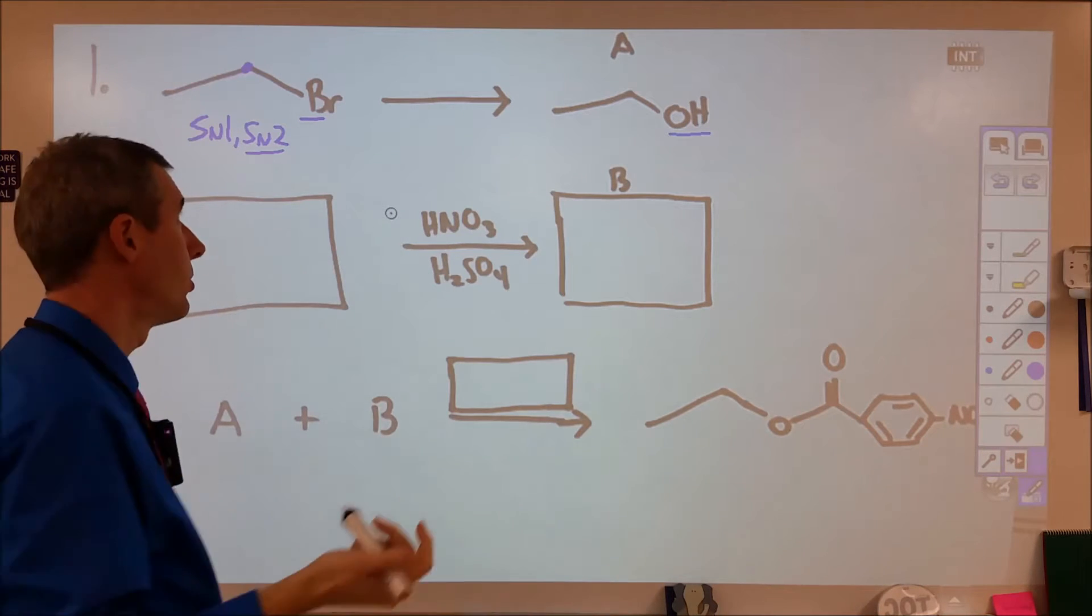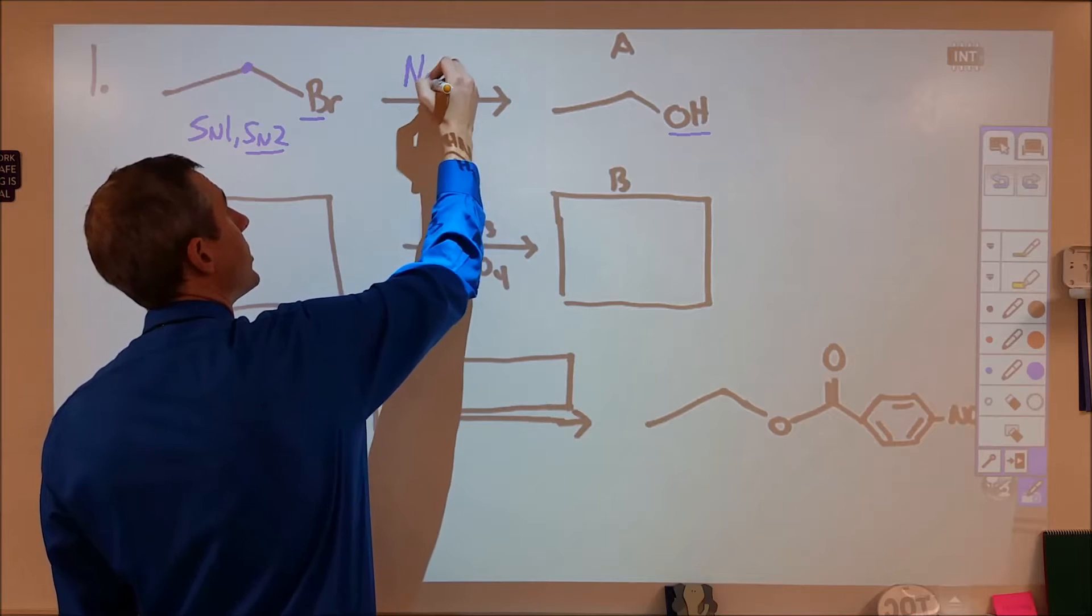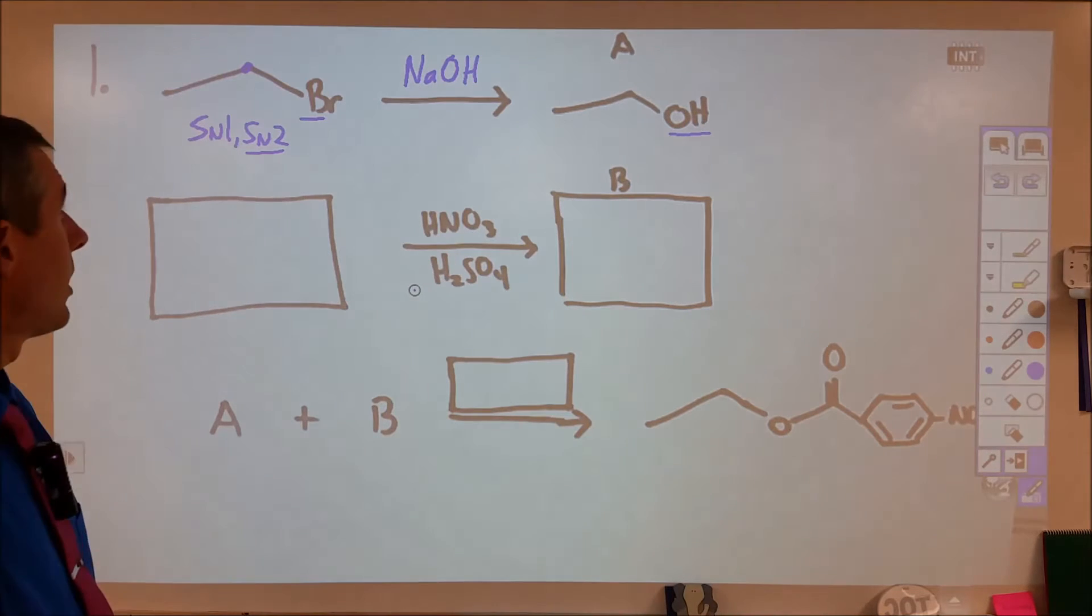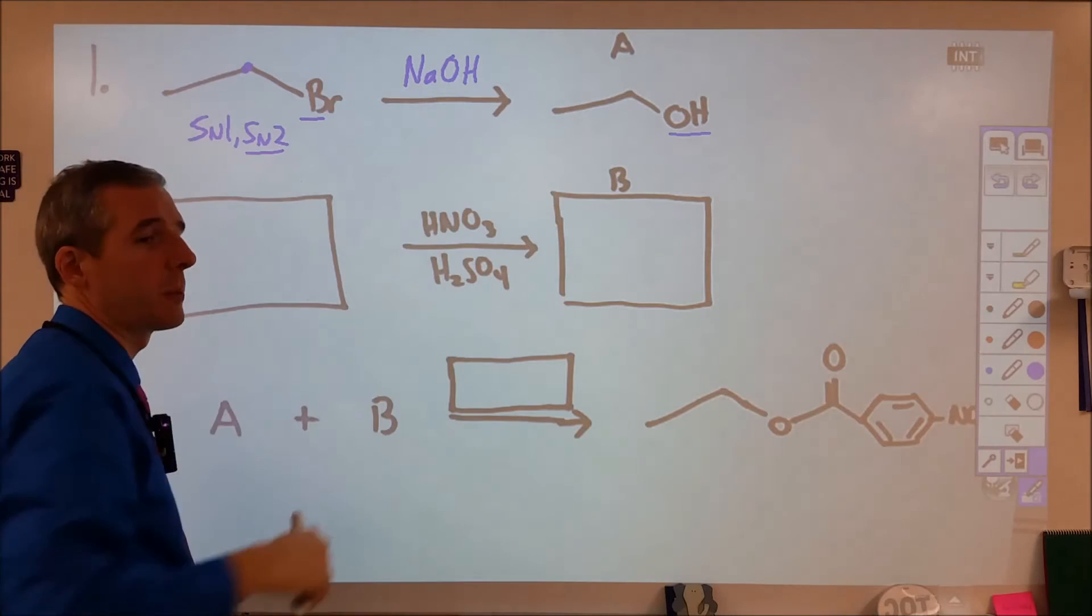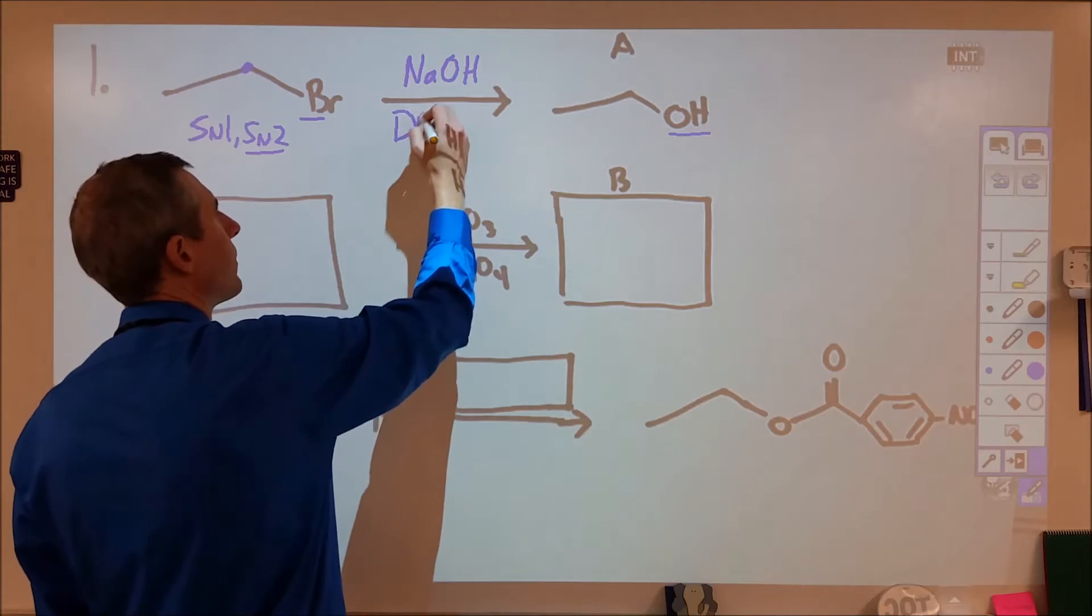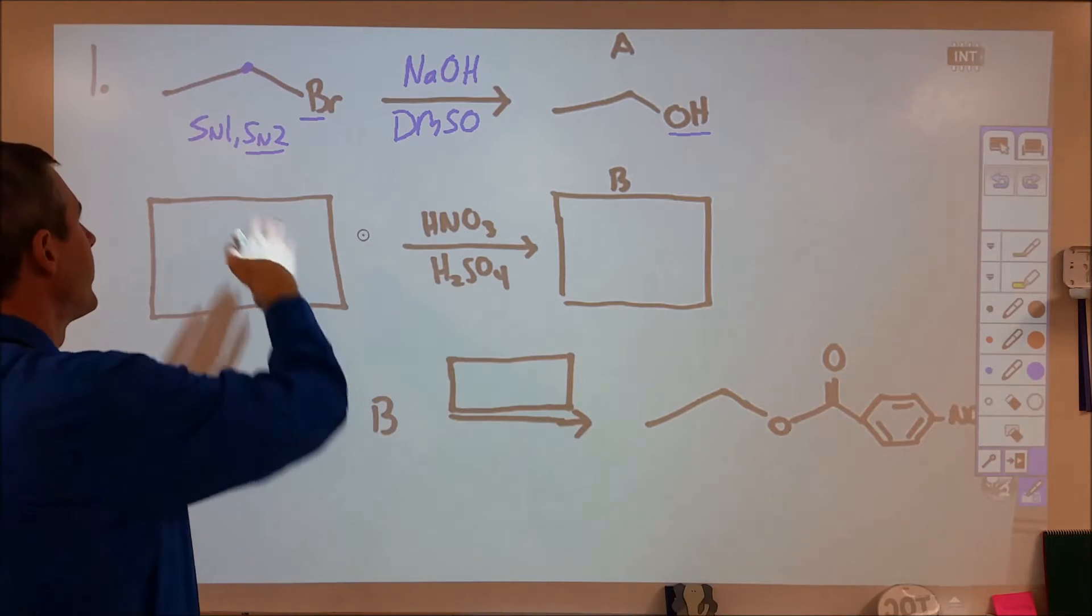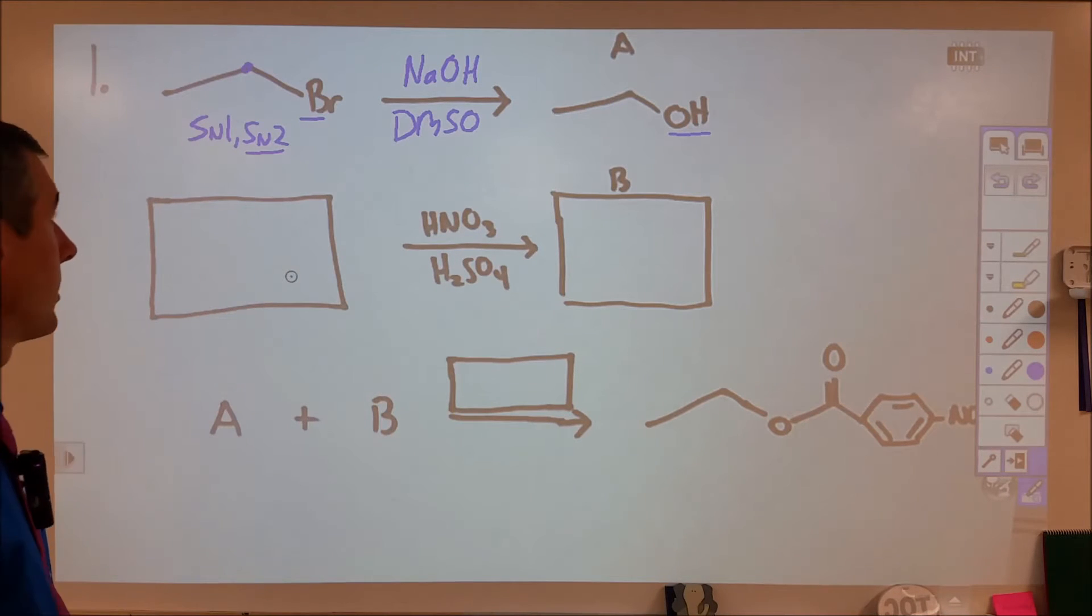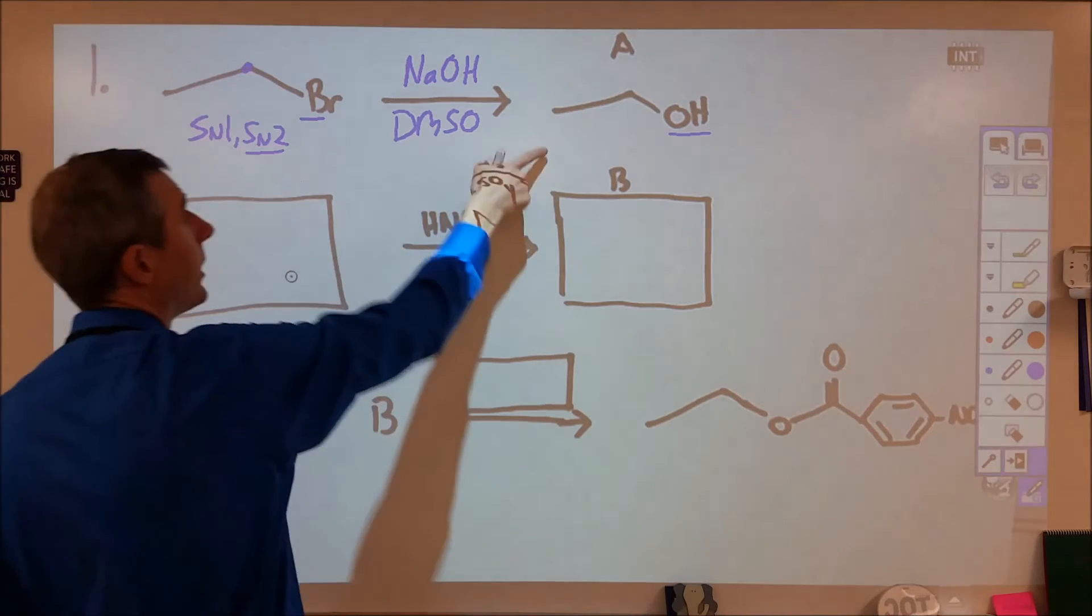So we need a hydroxide nucleophile, so let's say we add sodium hydroxide or hydroxide to it and then maybe we want to include the solvent for SN2. We want SN2 to be favored, so we want something that's polar aprotic. So maybe something like dimethyl sulfoxide, something polar aprotic. Really it wouldn't matter if you use something polar protic because this is definitely going to be SN2 anyway. So that's what we need to do to get from here to here.